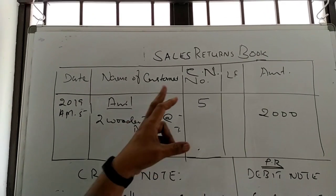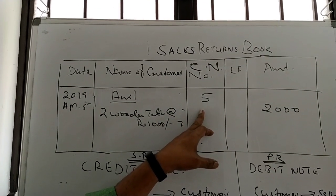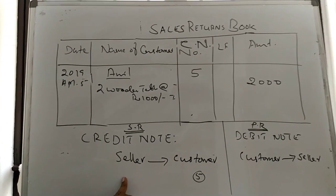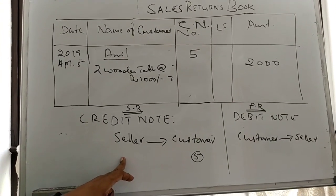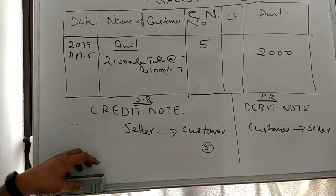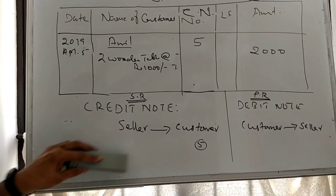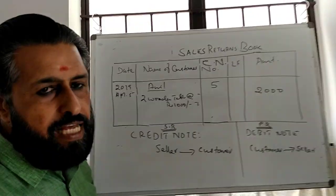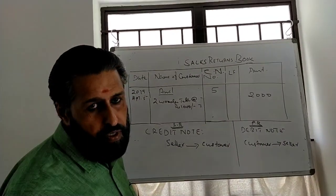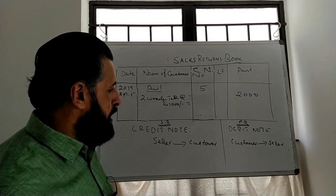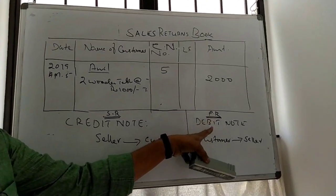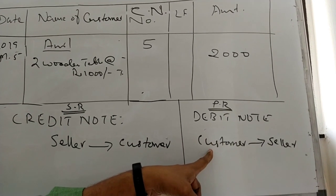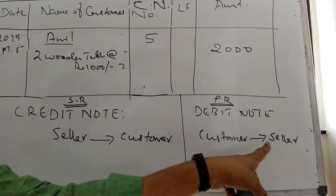It will show credit note number 5. There are no further details. Credit note is a statement prepared by the seller and sent to the customer. The customer is the buyer, and the seller prepares the credit note.